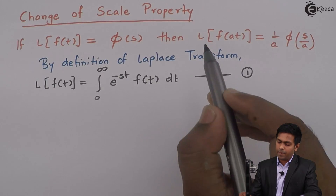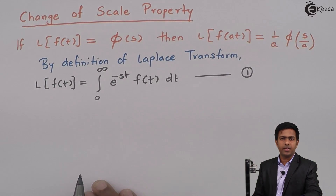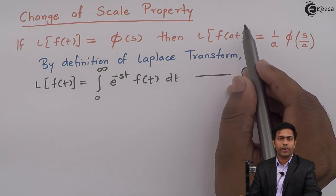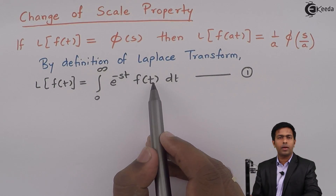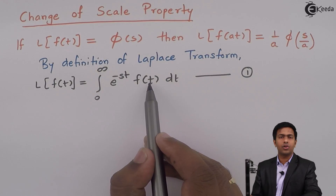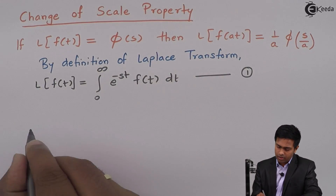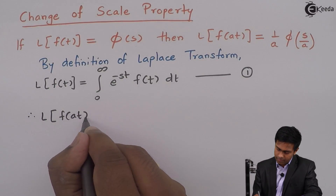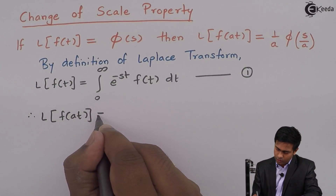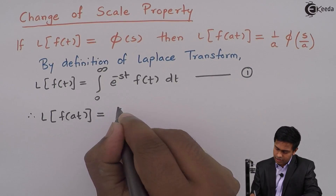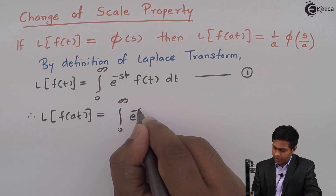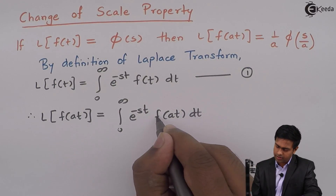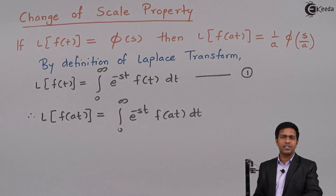Since we want to find the Laplace of f(at), we replace f(t) with f(at). Therefore, Laplace of f(at) is equal to the integral from 0 to infinity of e raised to minus s·t times f(at) dt. This follows directly from the definition of the Laplace transform.